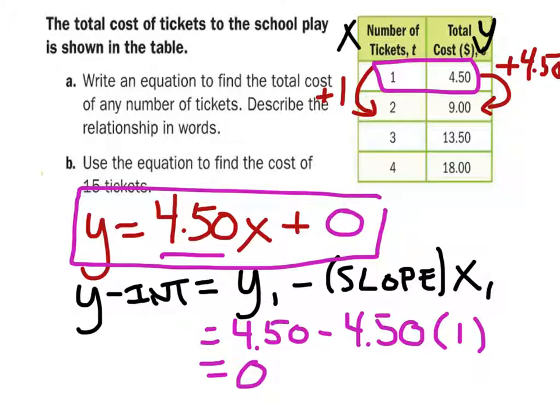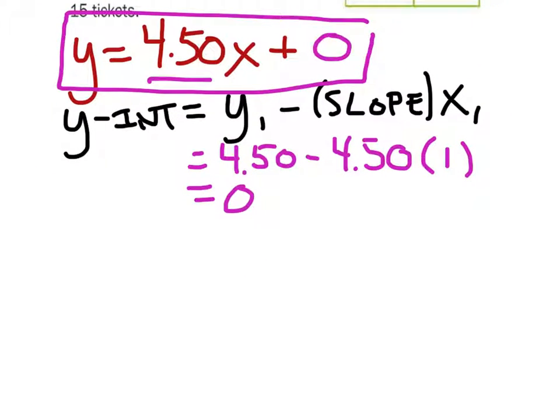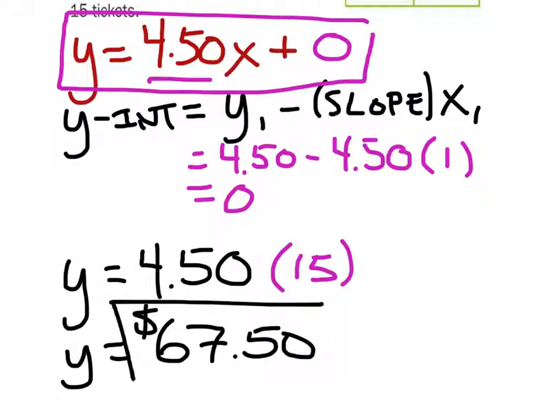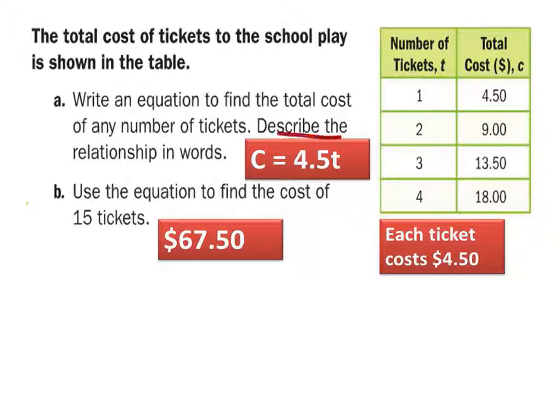Now we're going to use the equation to figure out how much it costs for 15 tickets. We've got y equals 4.50x, but x is the number of tickets, so we're going to replace that with 15. We don't need the plus 0. 4.50 times 15 is 67.50. So y equals 67.50 in dollars. It did say that it wanted the description in words. There you go. Each ticket's 4.50. Done.